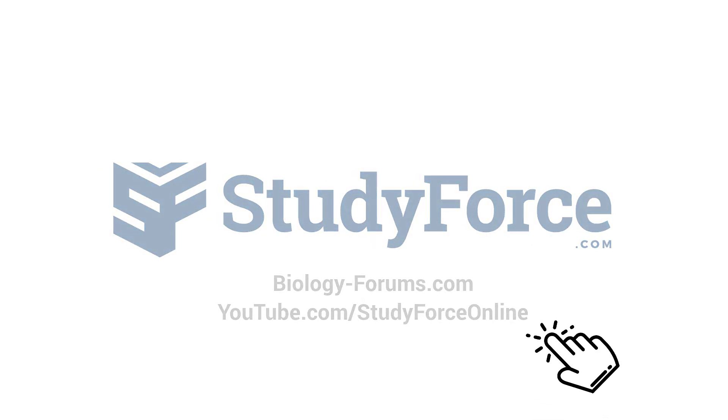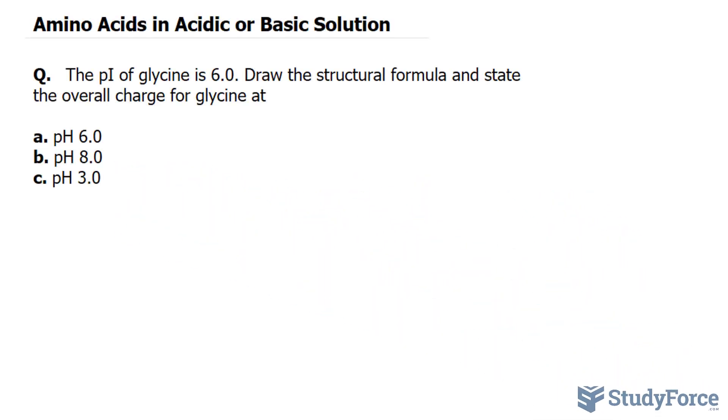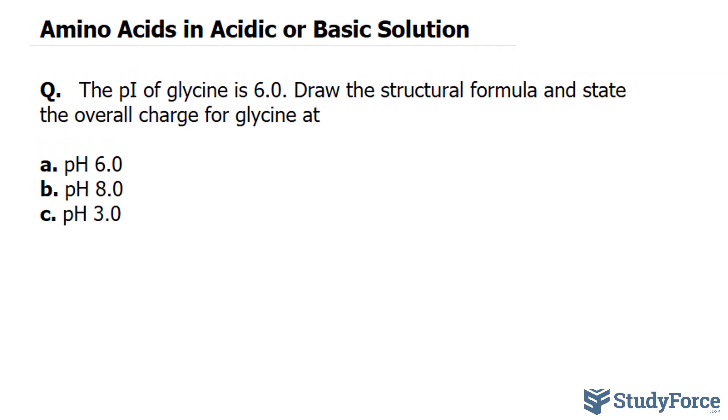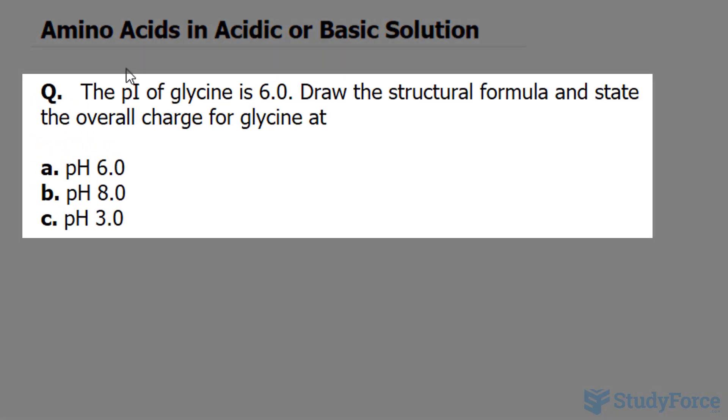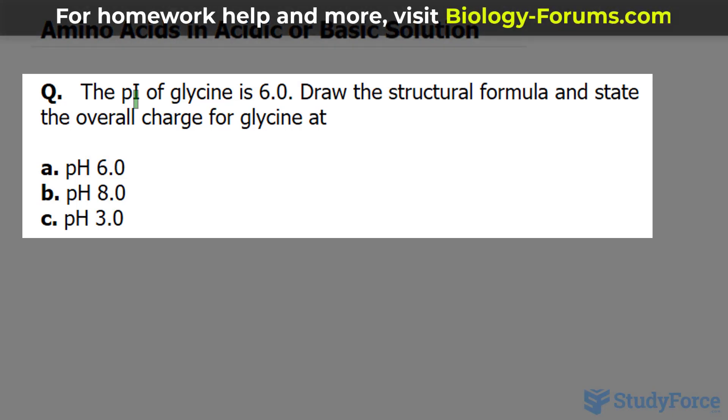In this lesson, we'll discuss what happens to the amino acid glycine at various pH levels. The question reads: the pI of glycine is 6 (pI is isoelectric point). Draw the structural formula and state the overall charge for glycine at 6, 8, and 3.